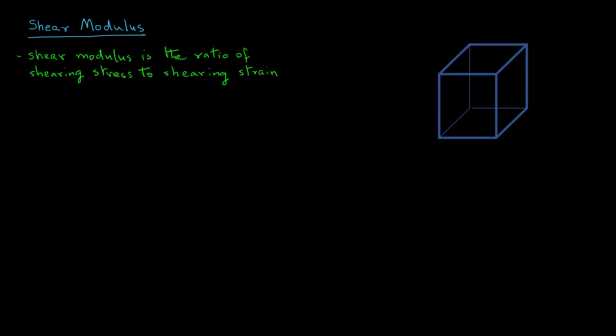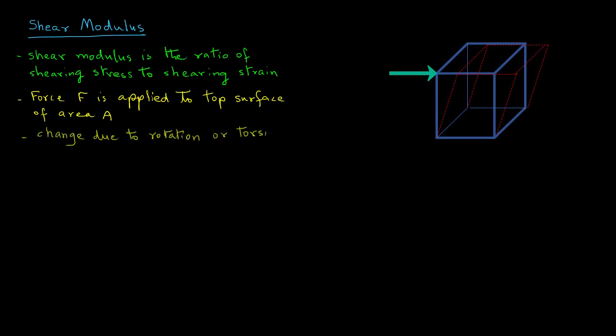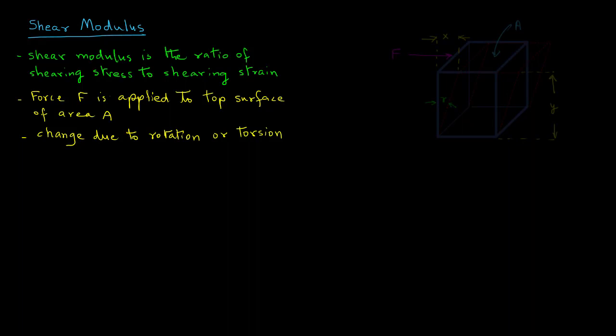So we have an object here and if we apply a certain force tangentially to the top surface, the object will experience a certain amount of torsion. As we see in this diagram, we can label some of the changes that occur due to that application of the tangential force.